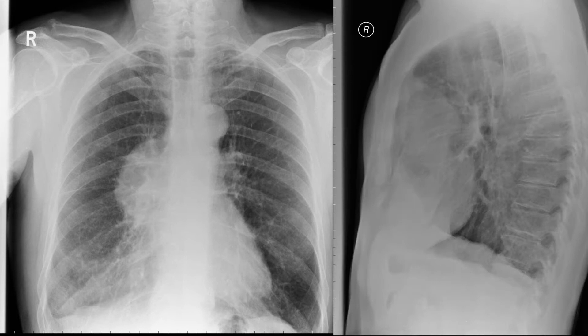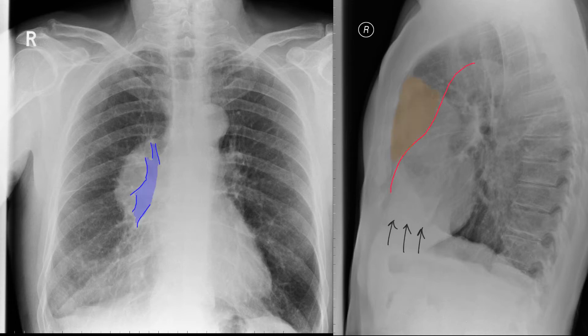On the lateral view, the retrosternal airspace is filled in, and you've also lost the anterior portion of the diaphragm on the right side. The diagnosis in this case was lymphoma.